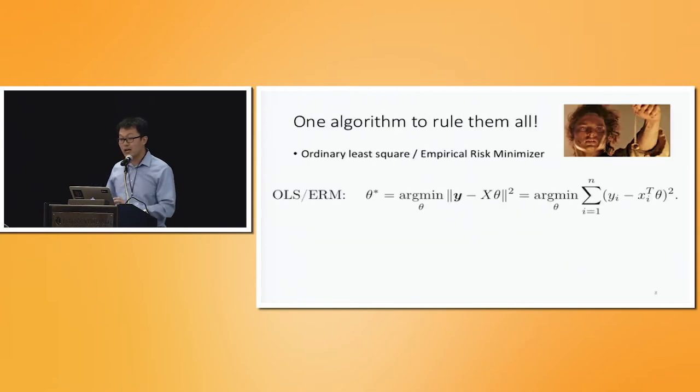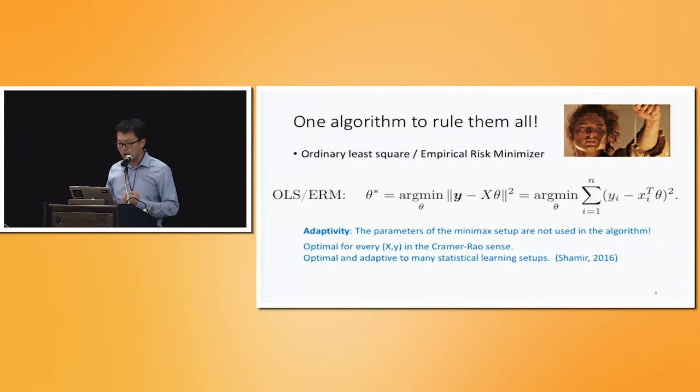Very interestingly, in the non-private setting, there is a single algorithm that's highly adaptive that can achieve simultaneously all the aforementioned lower bounds. So this is the ordinary least square algorithm or the empirical risk minimization when sometimes you have an additional constraint here on theta. So by adaptivity, I mean that the parameters of the aforementioned minimax setups, these bounds on X and Y and on this theta, they are not used in this algorithm at all. And also, you can in some sense, in the hindsight, choose the most favorable minimax setup for your particular algorithm and establish a matching upper and lower bound frame.